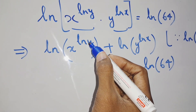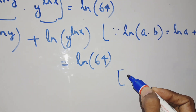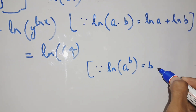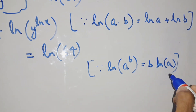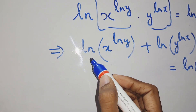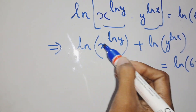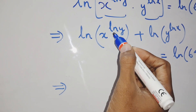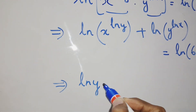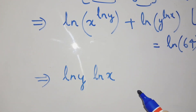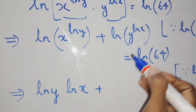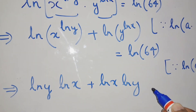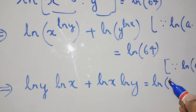Next we apply the power rule for logarithms: ln(a raised to power b) equals b times ln a. So ln of x to the power ln y becomes ln y times ln x. Similarly, ln of y to the power ln x becomes ln x times ln y. The equation now reads: ln y · ln x plus ln x · ln y equals ln 64.